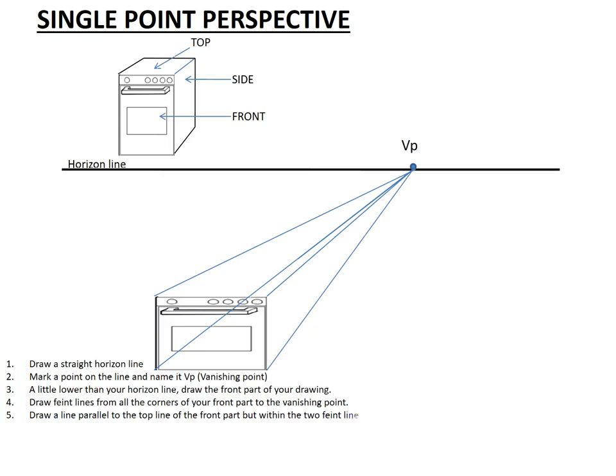Let's get to the next step. The next step says you must draw a line parallel to the top line of the front part, but within the two faint lines that are coming from the top. Let's check how it's going to look like. You see, those are the two faint lines coming from the top to the vanishing point. Within those two lines, but parallel to the top, you draw a straight line. Done with number five, we go to number six.